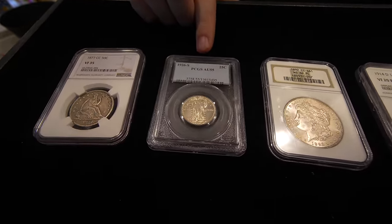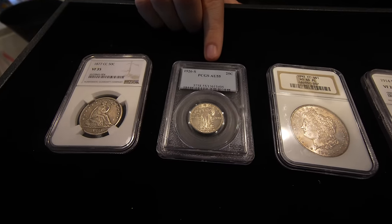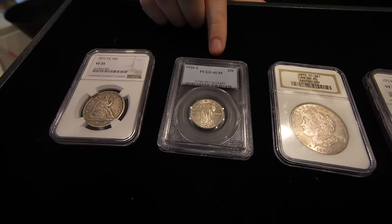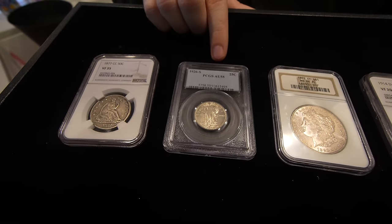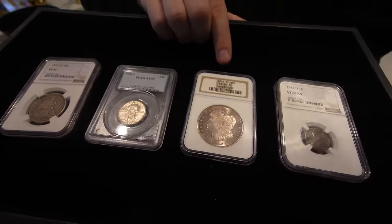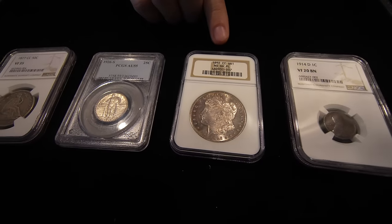26S is another coveted date in the Standing Liberty Quarter series in AU55. Once again, good remaining luster for an AU, really close to an AU58 in our opinion, but that's okay. We're going to leave that for the next collector. And we have this 92 CC Morgan Dollar in MS64 proof-like.